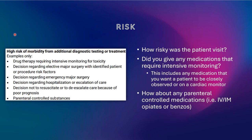Finally, we move on to the risk column. This has to do with how risky the patient visit was. It mostly entails medications that you gave the patient or procedures that you performed. The categories include: drug therapy requiring intensive monitoring for toxicity; procedural risk; emergency major surgery such as appendectomy or cholecystectomy; hospitalization; making the patient a DNR or deescalating care; and if you gave the patient parenteral controlled substances such as IV or intramuscular opiates or benzodiazepines.